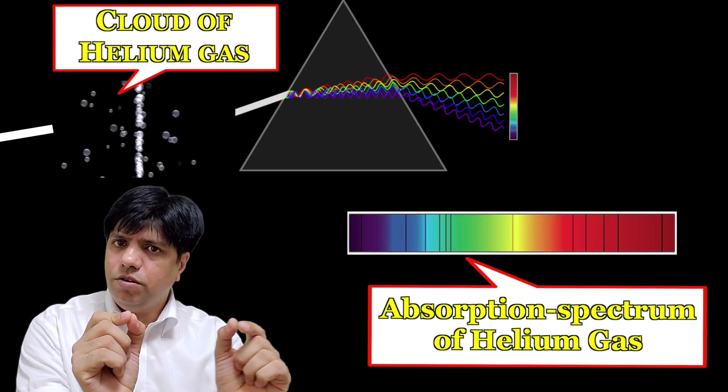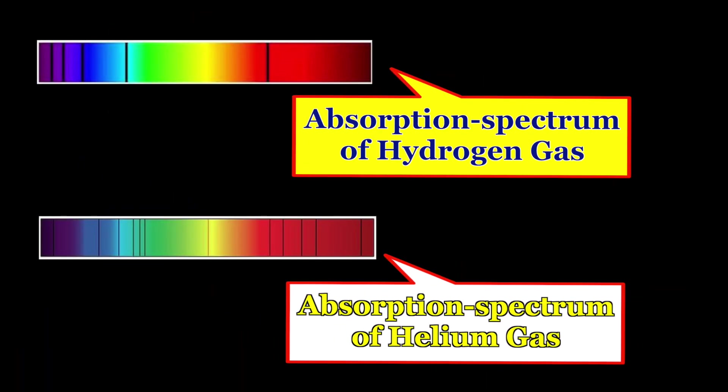These black lines in the light spectrum are specific to a certain compound or element or gas. So every single compound or element we have a specific pattern where you'll see black lines, these black gaps in the spectrum of light.